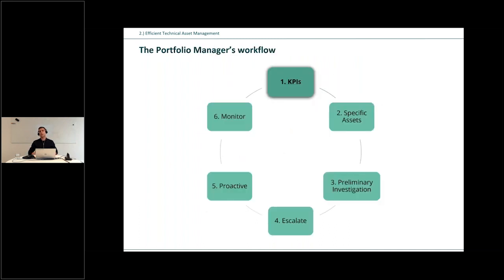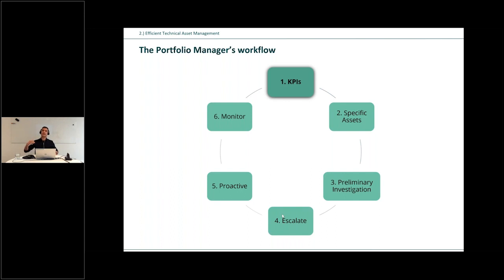When it comes to technical asset management, we will mostly go through a specific workflow — what we call the portfolio manager's workflow. We will start from looking at key performance indicators on a portfolio level, then go down to specific assets — from portfolio to site level, down to a turbine or component level. We will also try through a preliminary investigation to identify what kind of issue we are dealing with, which will lead us in the right direction.